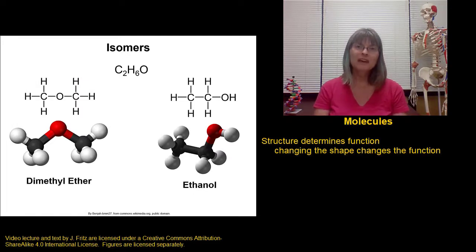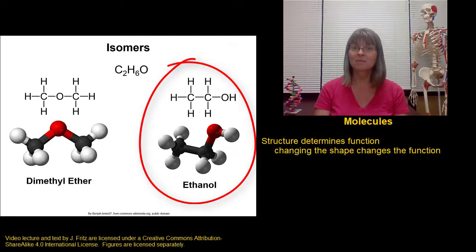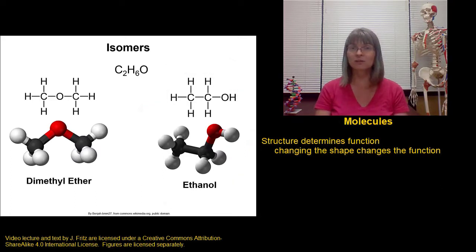On the other hand, if we put the oxygen at the end of the molecule, then we have ethanol. Ethanol is a liquid at room temperature, and it's better known as the alcohol that's found in beverages that may be consumed in moderation by persons over the age of 21. That very small change in the structure gives it a very different function than dimethyl ether.